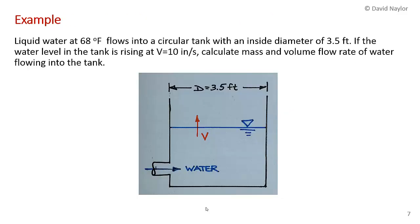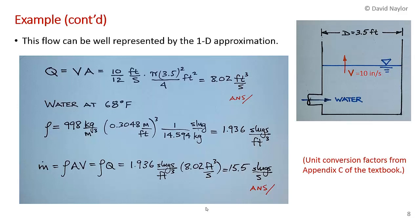I thought I'd end with a very simple example just to illustrate this — simple but very important. Consider liquid water flowing at 68 degrees F into a circular tank with an inside diameter of 3.5 feet. If the water level in the tank is rising at 10 inches per second, we want to calculate the mass and volume flow rate of water flowing into the tank. This kind of flow is really well represented by a one-dimensional approximation, since the velocity of the rising water level is very uniform across the surface — like filling the sink in your kitchen.